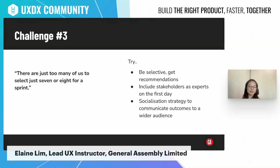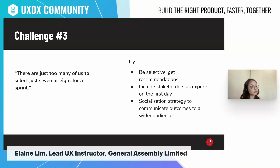The third challenge comes in large organizations where there are just too many candidates for a sprint. Unfortunately, the reality is that you need to be selective. Get recommendations for participants who are looking to proactively contribute and are vested toward the outcomes of the problem space. If needed, you could also include some stakeholders as experts on the first day during the expert interviews — that way they are still able to contribute fully to the design sprint. And because it's a huge organization, you want to have a socialization strategy to communicate outcomes to a wider audience.